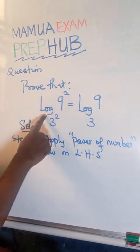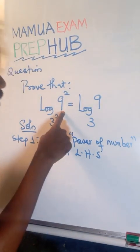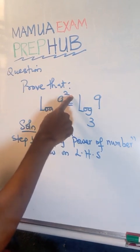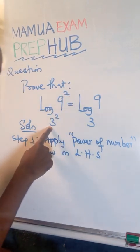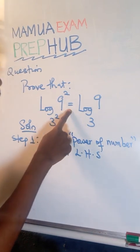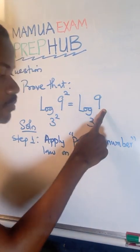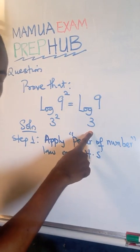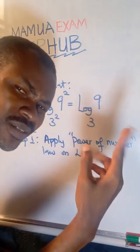It's a proof that log 9, index 2 or exponential 2, base 3 raised to the power of 2, is equal to log 9 base 3. So we are going to solve this in two simple steps.